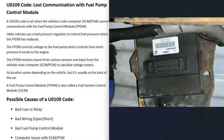This fuel pump control module gets inputs from different sensors along with the vehicle's main computer — the engine control module or the powertrain control module. It basically controls the voltage going to the fuel pump, which controls the fuel pressure. When the voltage is lower, the fuel pressure is lower, and when the voltage is higher, the fuel pressure is higher.